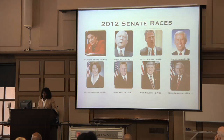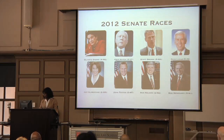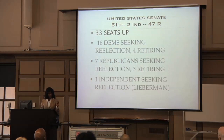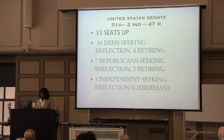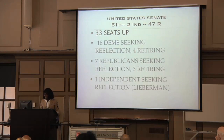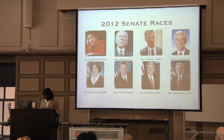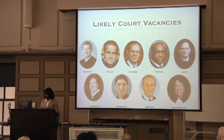We have a number of Senate races in 2012, some of which may be contentious, divided among Republicans and Democrats. The Senate is currently closely divided with 51 Democrats, two independents who caucus with the Democrats, and 47 Republicans. There are 33 seats up: 16 Democrats seeking re-election, four retiring, seven Republicans seeking re-election, three retiring, and one independent seeking re-election — Lieberman from Connecticut. So there is a lot at stake in the Senate races and a great deal at stake in the next presidential race.